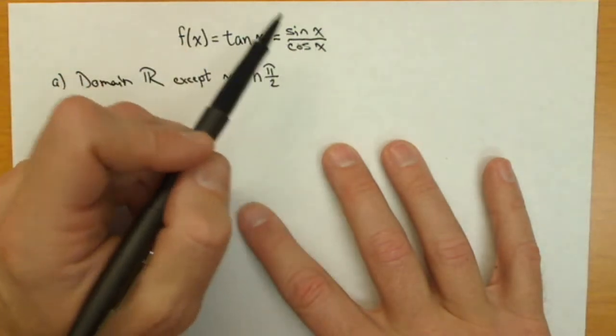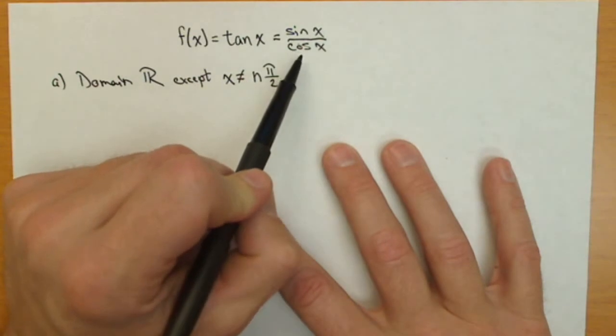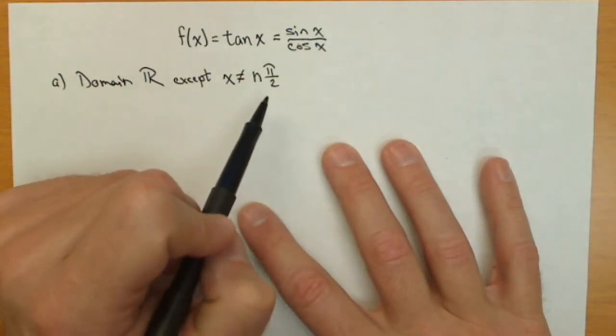π/2, 3π/2, 5π/2, negative π/2. Those are all places that make cosine 0, so they're places we have to exclude from our domain.